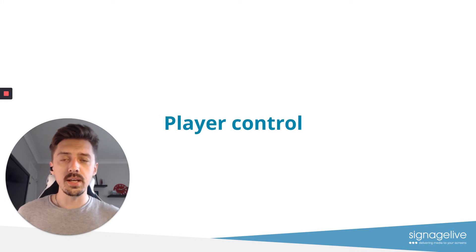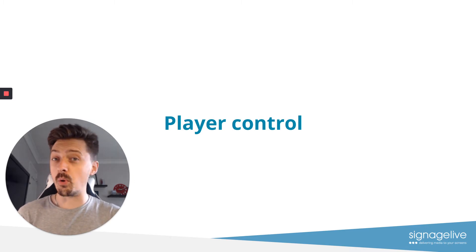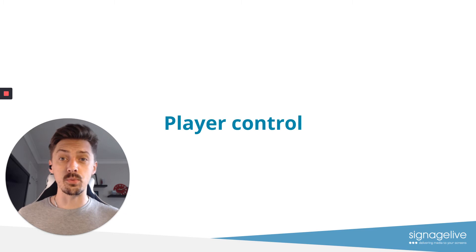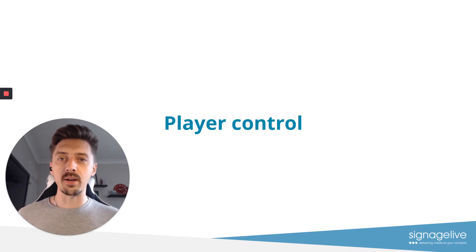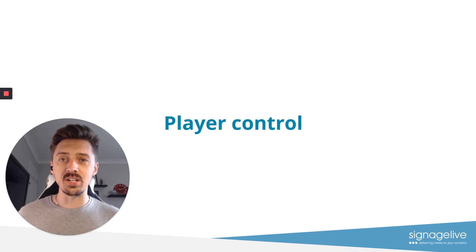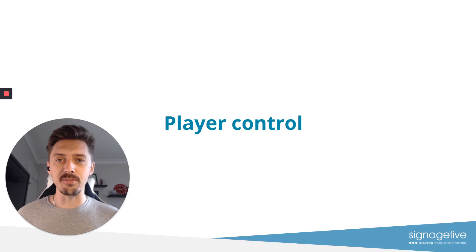The next factor is player control. Player control is important especially if you're managing multiple devices or you're not at the location of those devices. Being able to turn off your players, reboot them, receive reporting on them, and make sure they're all running as expected is vital — it's probably one of the biggest backbone pieces of what a CMS platform should do. The ability to quickly confirm players are running as expected, receive regular reports, and get notifications if players go down, lose internet, or power — being able to control those players at the most granular level possible is something to look for.